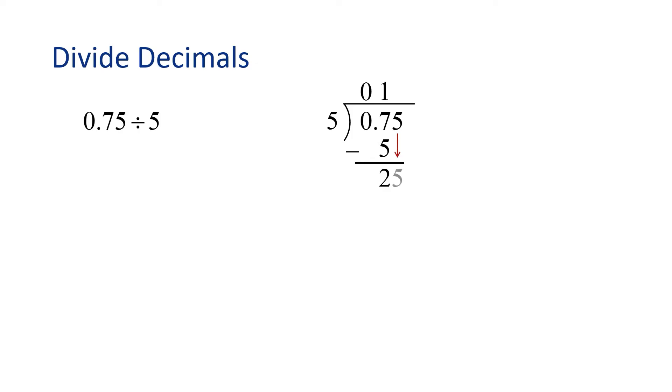Next, we're going to bring down the next digit, which is 5. And now we're going to ask ourselves, how many times does 5 go into 25? That's right, 5 times. Because 5 times 5 is 25.